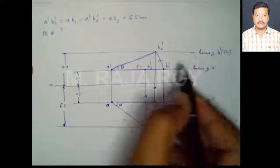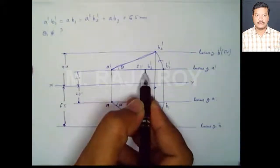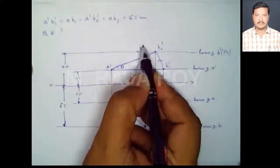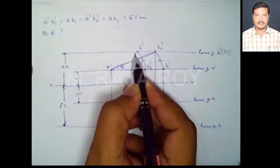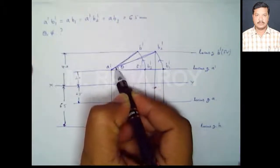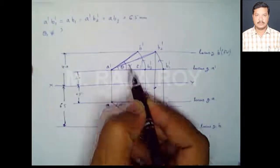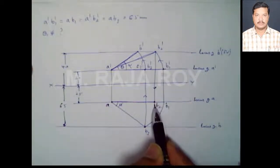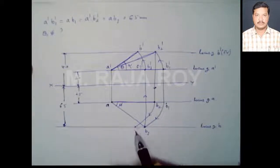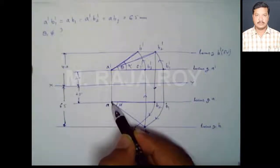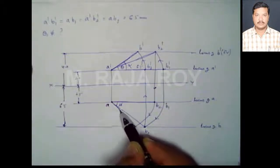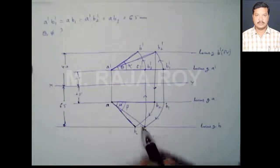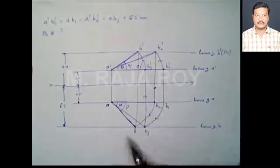To get the final projections, take the reduced front view A'B3' and rotate it until it touches the locus of b'. With A'B1' as the center and A'B3' as the radius, draw an arc — you will get B', so A'B' is the final front view, and this angle is the apparent front angle alpha. Now take the reduced top view and rotate it until it touches the locus of b line AB1 — this is the final top view, and this angle is apparent angle beta. The verification is that B' and B must lie on the same projector.